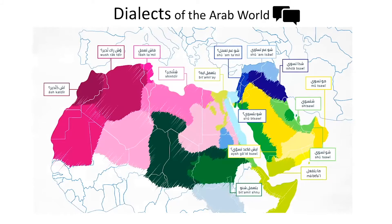Here is an infographic showing the different ways you can say 'what are you doing?' across the Arab world. In Egypt you would say 'bit'amil ee', but if we go over to Palestine you would say 'shu bit'sawi'. You can really hear the difference — in Egypt it's 'bit'amil ee', and in Palestine it's 'shu bit'sawi', so they sound completely different.